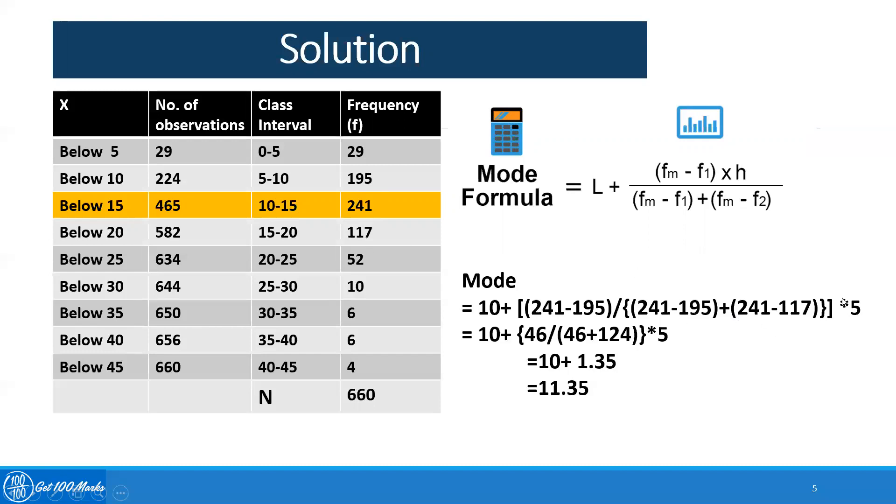Everything multiplied by 5. 5 is the common width, which is the gap of the class interval. So once we calculate it, we have found out 11.35. This is the modal value.